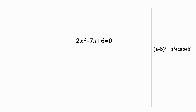Also, let's remember that whatever is on the left side of the equal to sign is referred to as left hand side or LHS, and whatever is on the right side of the equal to sign is referred to as right hand side or RHS.